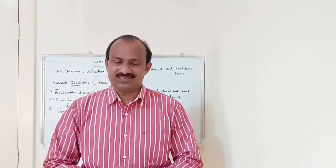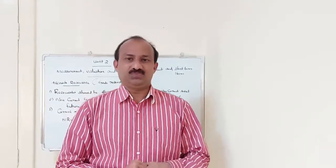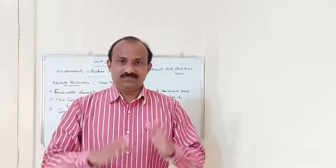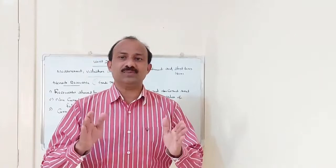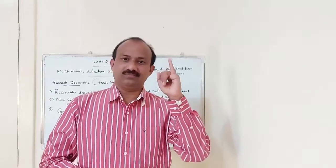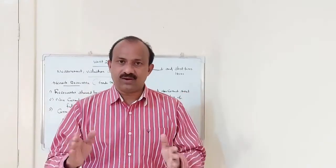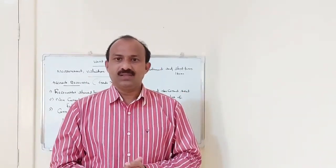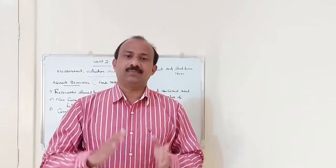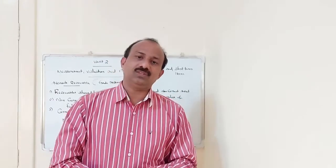Hi everyone. Today we are going to discuss CMA Chapter 2, otherwise known as Unit 2. In this chapter, we are discussing measurement, valuation, and disclosure of investments and some short-term items. The key areas in this chapter are accounts receivable, the treatment of accounts receivable, inventory valuation, inventory fundamentals, inventory cash flow methods, equity, investments in securities, and some business combinations. These are the major areas in this chapter.